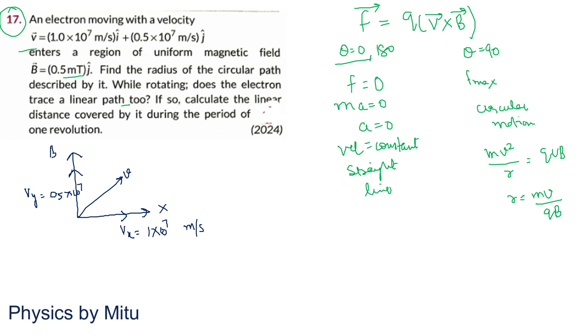Magnetic field is along Y direction, written as J cap. Now, we know if theta is 0, straight line motion happens. So the VY component causes straight line motion. And VX causes circular path. So both added, circular motion plus straight line gives us helix.